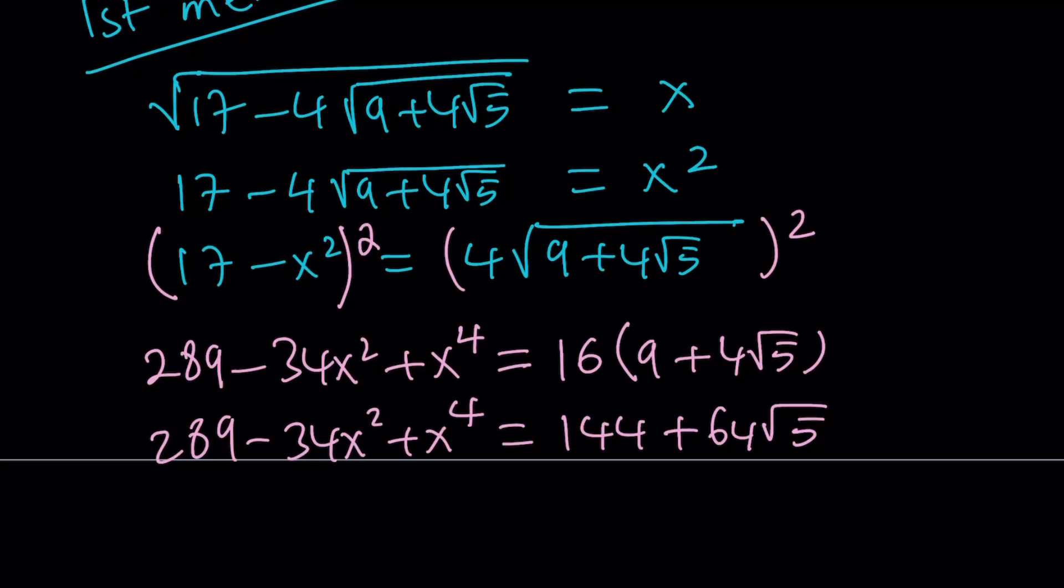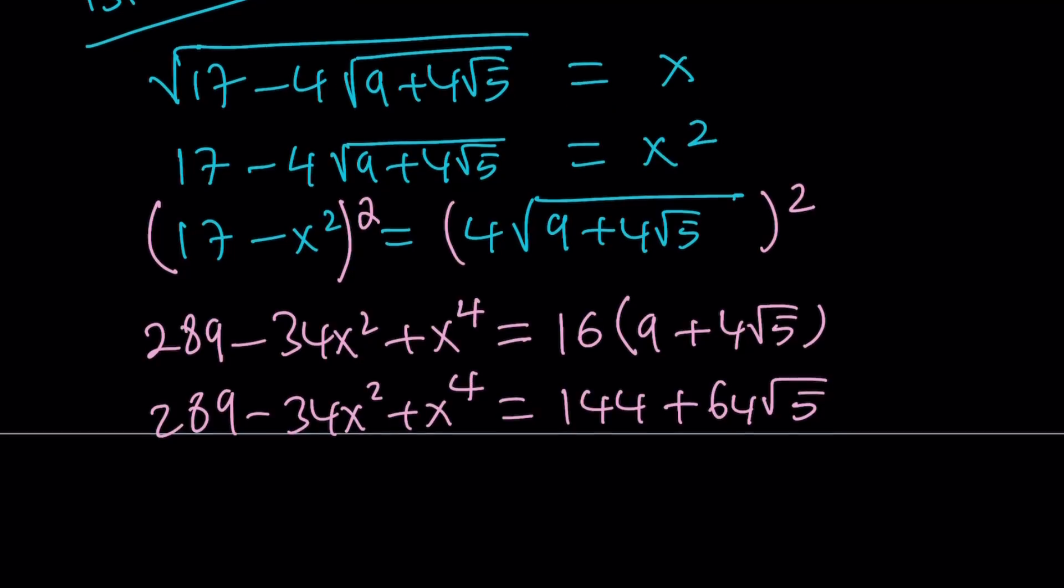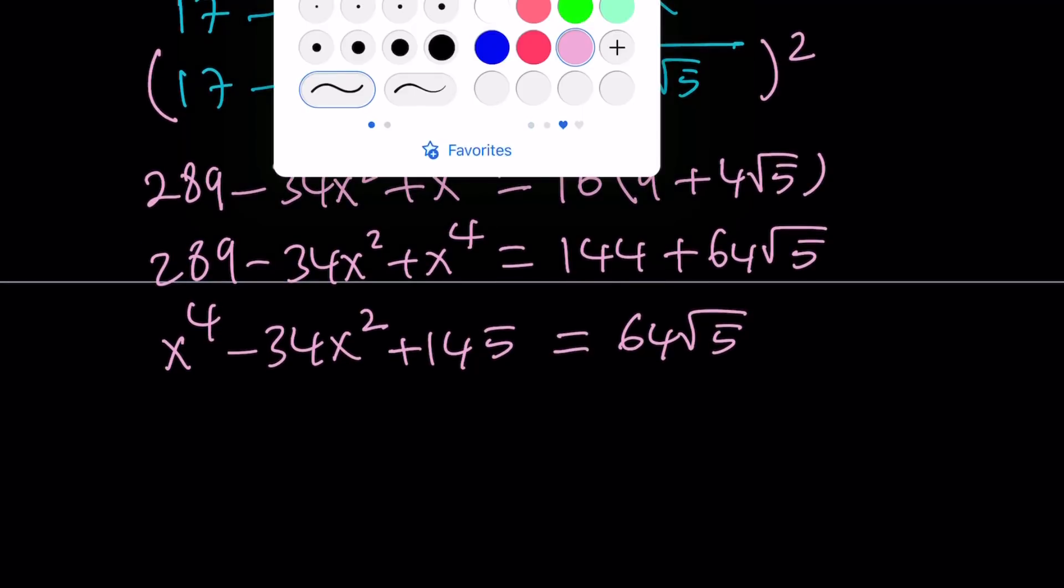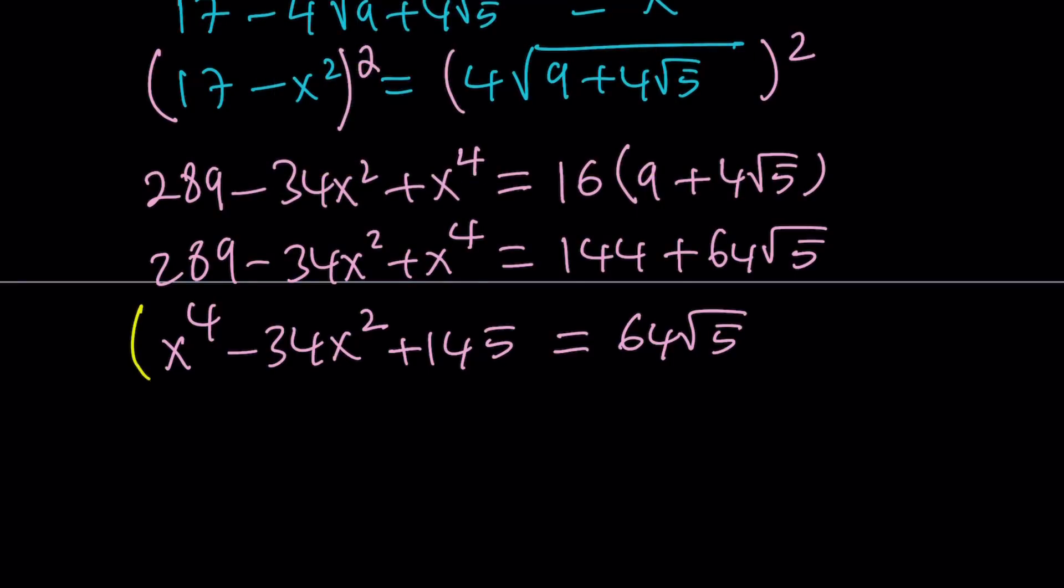This can be written as 144 plus 64 root 5. We can put everything on the left-hand side except for the radical. So we can write this as x to the fourth power minus 34x squared plus 289 minus 144. Notice that 289 is 2 times 144 plus 1, so when you subtract, it's just going to be 145. And that equals 64 root 5. I want to get rid of all the radicals, so let's square both sides again.